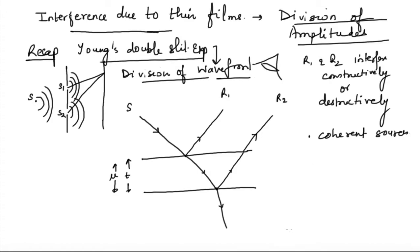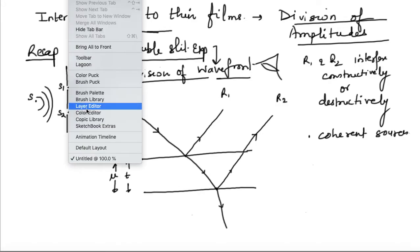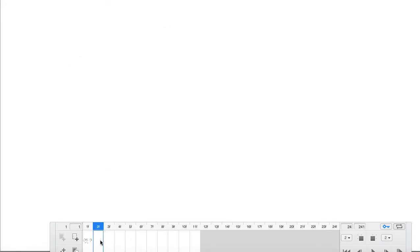Now our next goal is to calculate the effective path difference between the two waves. We know that if the path difference is an integral multiple of lambda it will be maxima, and if it is an odd multiple of lambda by 2 it will be minima.